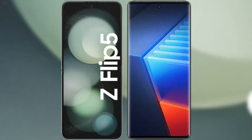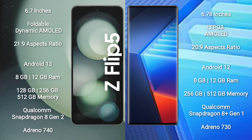I will compare the new Samsung Galaxy Z Flip 5 with the Vivo IQ 10 Pro. The Samsung Galaxy Z Flip 5 comes with a 6.7-inch 4-level dynamic AMOLED display and aspect ratio 21.9. The Vivo IQ 10 Pro comes with a 6.78-inch LTPO 3 AMOLED display and aspect ratio 20.9.